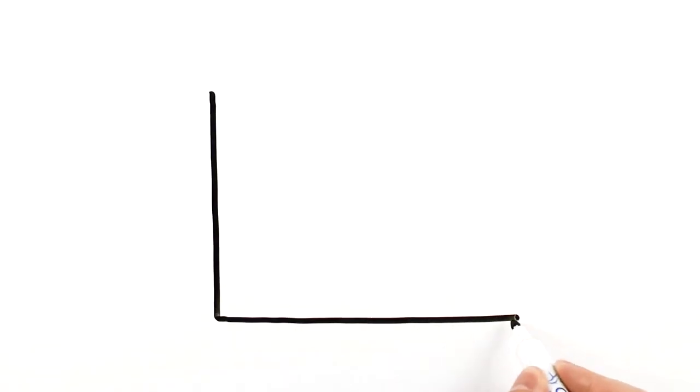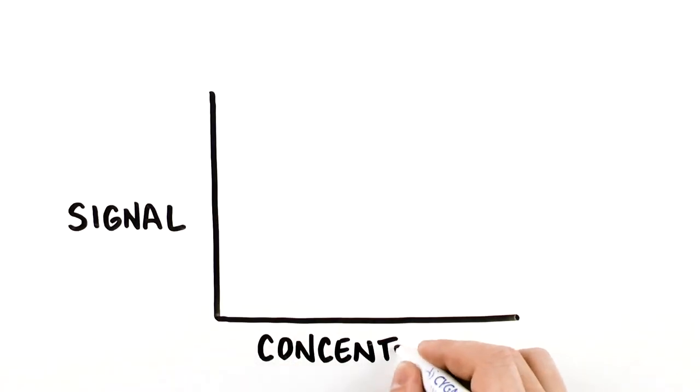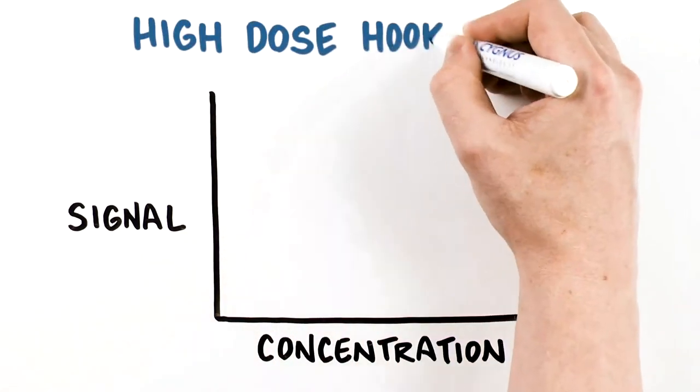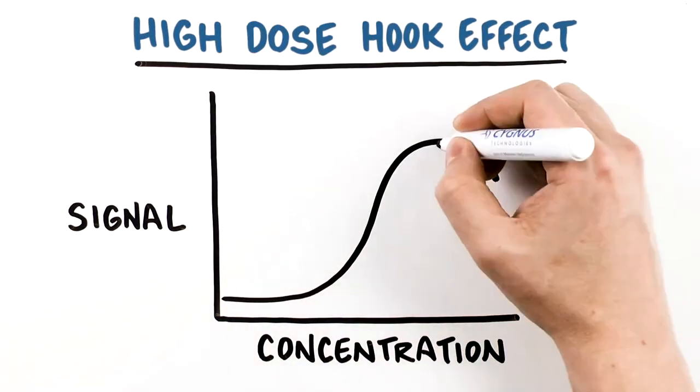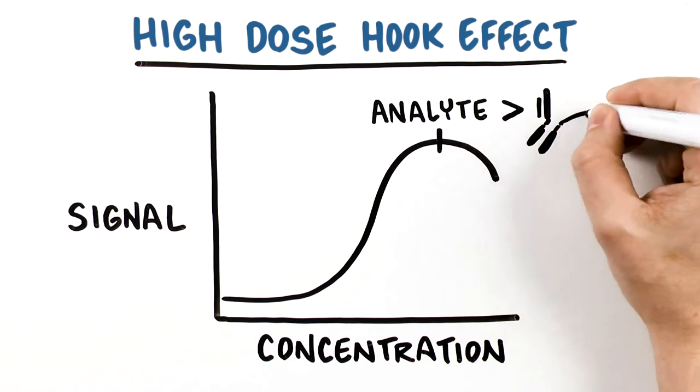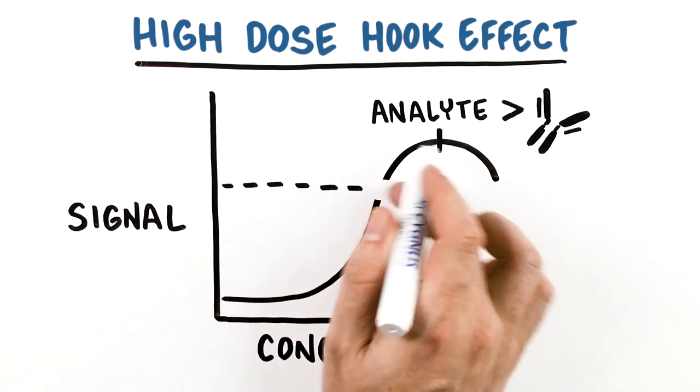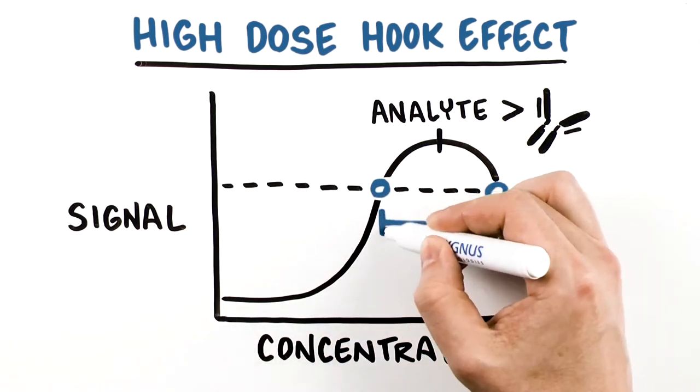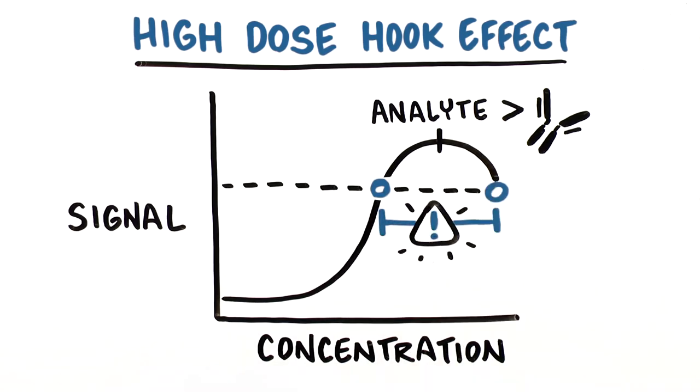The linear dilution process is particularly useful to test for the potential of a high-dose hook effect in cases where the concentration of analyte exceeds the amount of antibody. Failure to test for hook effect can result in severe underestimation of true impurity concentrations.